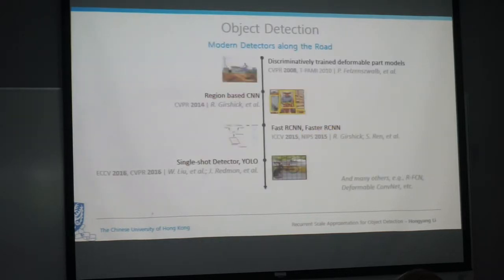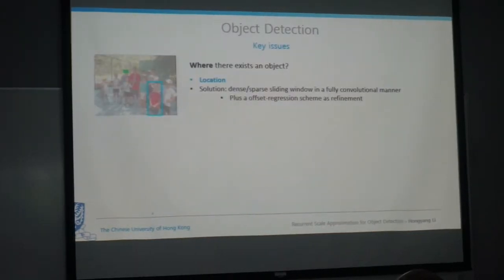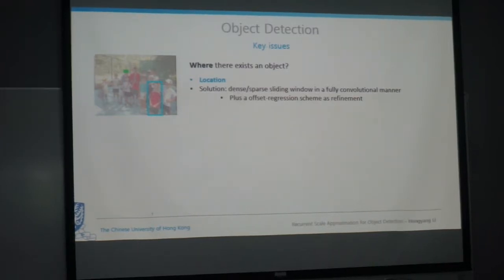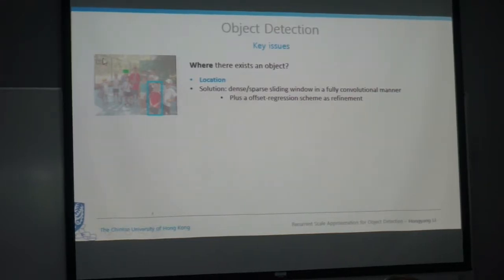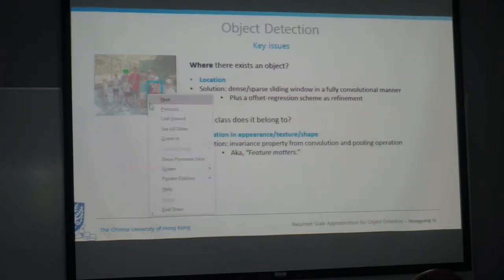For object detection there are many key issues. The first is location — where the bounding box is within the image. The popular solution is dense or sparse sliding window in a fully convolutional manner, placing many bounding boxes in a dense or sparse way, plus an offset regression scheme as refinement. If you have the bounding box shown as a blue box, you slightly refine its location by regressing the offsets.